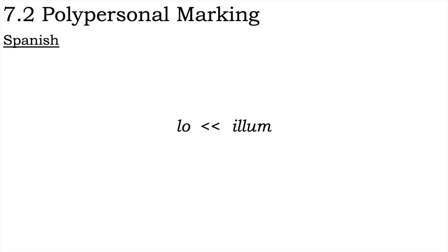Note also that, unlike in Latin, these Romance object clitic pronouns cannot freely occur in many different positions. Instead, there are a limited number of places within the clause where they can occur, generally either directly before or directly following the verb. This is another indication that they have become grammaticalised and are no longer completely independent pronouns, but rather are partly on the way to becoming verbal affixes marking person. Many Romance languages, thus, are a good demonstration of the beginning stages of the creation of polypersonal marking.